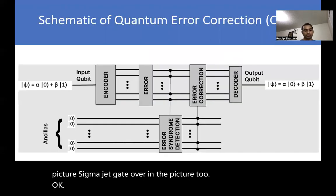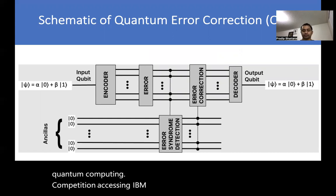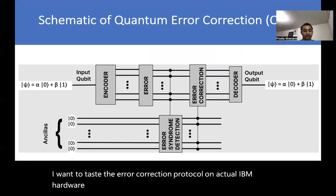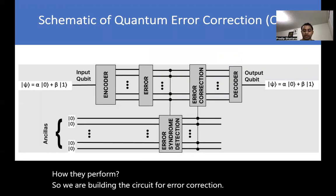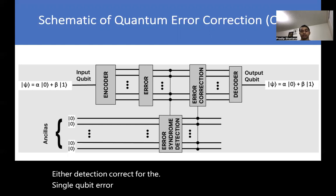The main goal of this research is quantum computation accessing IBM's quantum computer. I want to test the error correction protocol on actual IBM hardware to see how it performs. We are building the circuit for error correction and detection of single-qubit errors in a nine-qubit logical circuit on Qiskit.